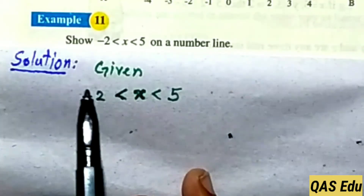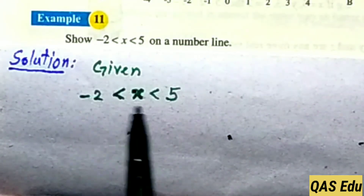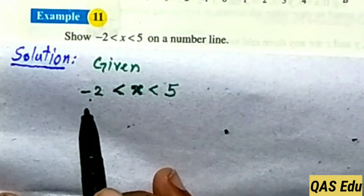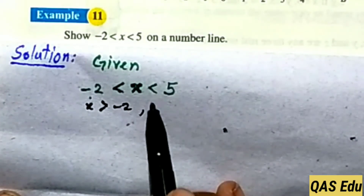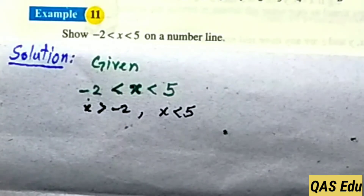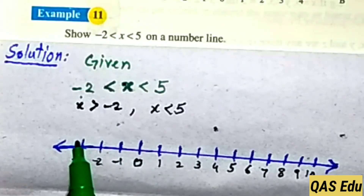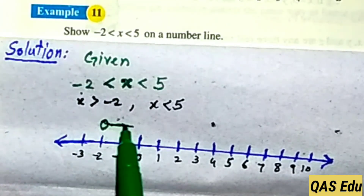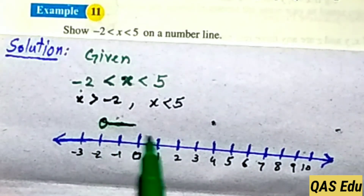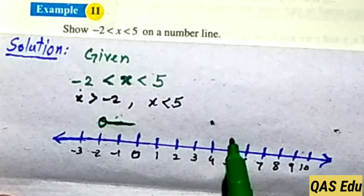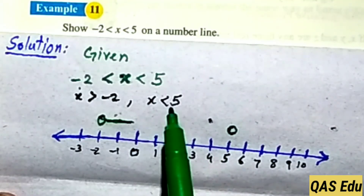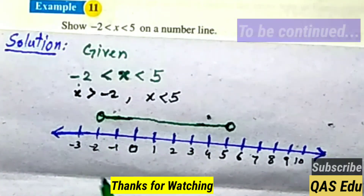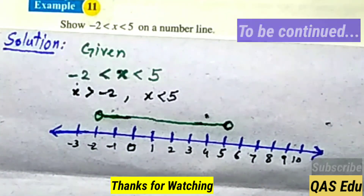Example 11: This type of question appears frequently in exams. Show on the number line: x is greater than minus 2, and x is less than 5. For x is greater than minus 2: draw an empty circle at minus 2, arrow pointing right. For x is less than 5: draw an empty circle at 5, arrow pointing left. The overlapping middle region is the solution set for this compound inequality shown on the number line.